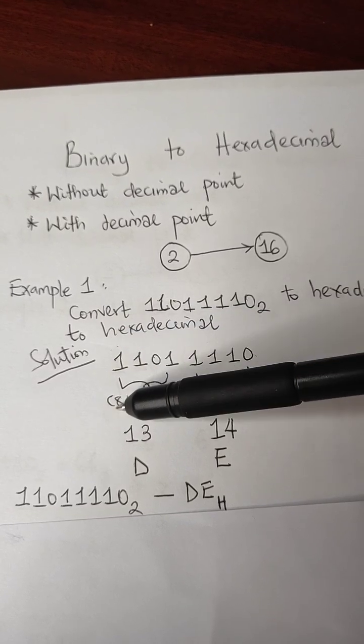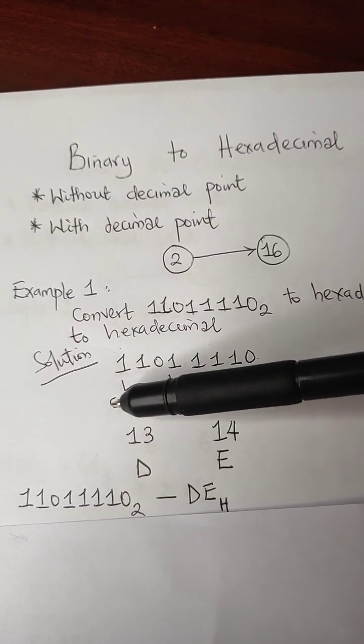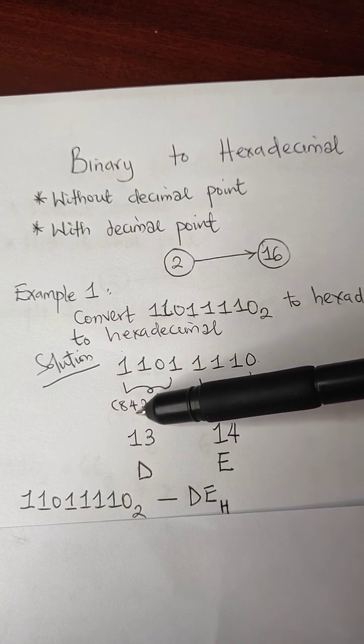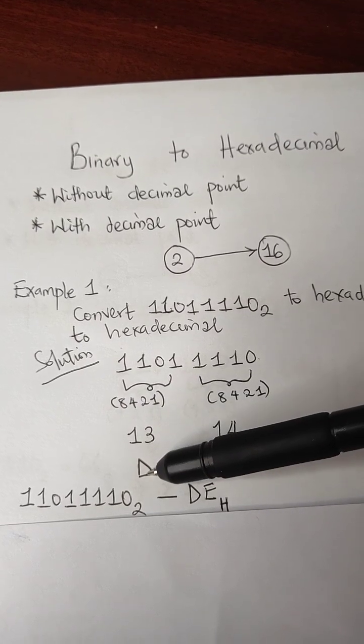I'll go to the other side, we have 8, 4, 1. So we have 8 plus 4 plus 1, which is 13, which represents D.